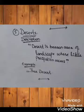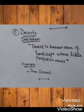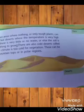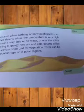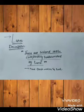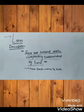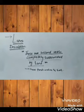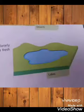Next is deserts. A desert is a barren area of landscape where little precipitation occurs. An example is the Thar Desert. Next is lakes — these are inland seas completely surrounded by land. They have both fresh water and salt water.